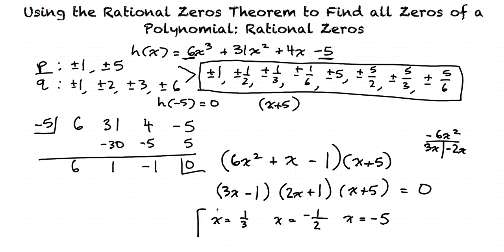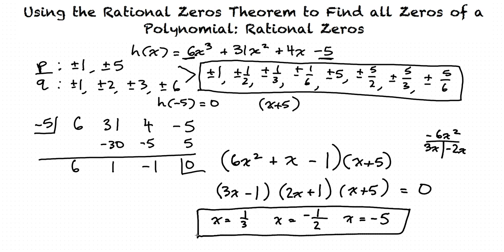These are our three zeros for the polynomial 6x cubed plus 31x squared plus 4x minus 5. We began by using the Rational Zeros Theorem, which we were then able to plug into synthetic division, simplifying our polynomial, which was then factored, leaving us with three final factors and our three final zeros.